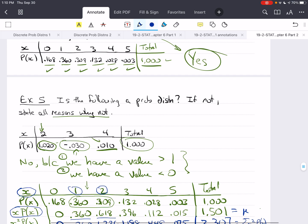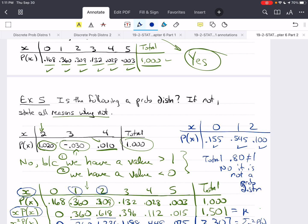So, we could do another example where we had x, P(x), and let's say we had 0, 1, 2, and we had 0.155, 0.545. So, that gives us 0.7, and then let's say 0.1. So, this is between 0 and 1. This is between 0 and 1. This is between 0 and 1. But the total is equal to only 0.8. It's not equal to 1. So, no, it is not a probability distribution.